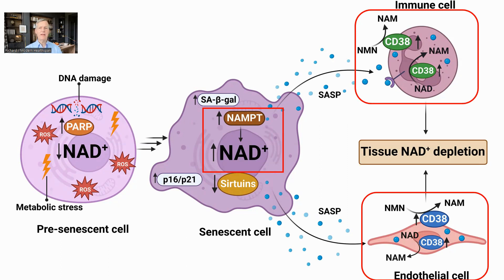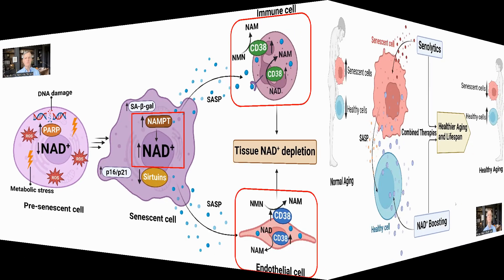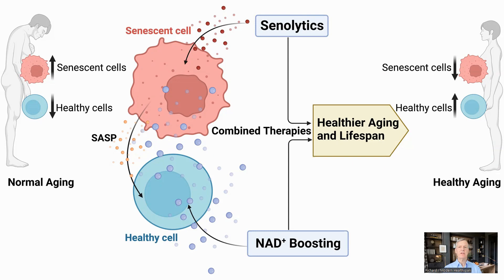Lowering the NAD then moves these other cells towards senescence as well. In the paper, the authors call for more study on the interaction between NAD, senescence, and cancer, especially for long-term administration of NAD boosters. They also point out the preclinical benefits seen in inhibiting CD38 with apigenin or 78C, where 78C is a chemical only available for laboratory use. The authors note that boosting NAD without removing senescent cells may increase SASP production; however, there are potential benefits in combining senolytics with an NAD boosting regimen, and they call for studies in this area.